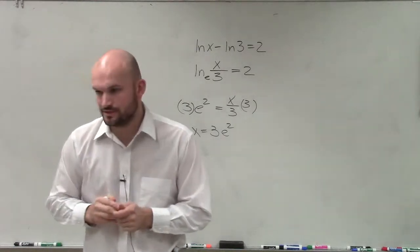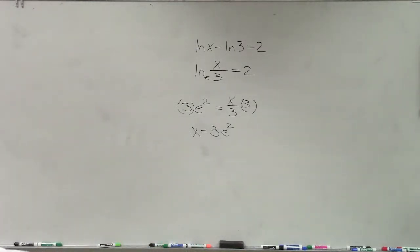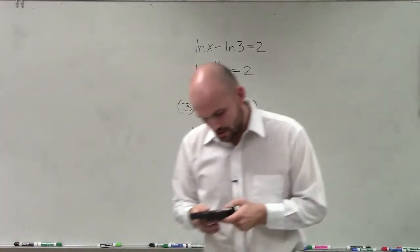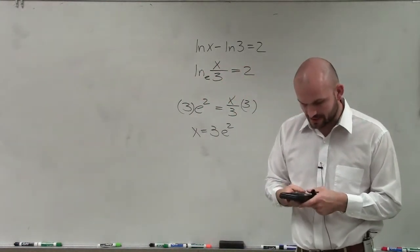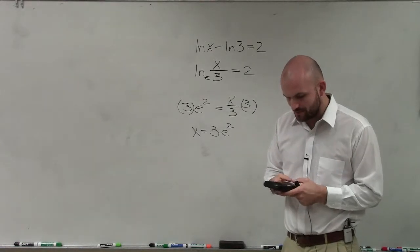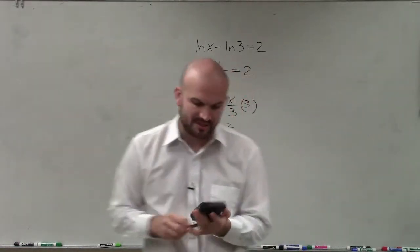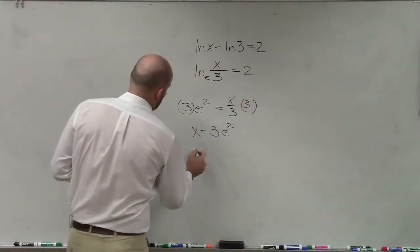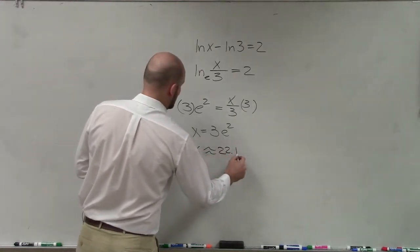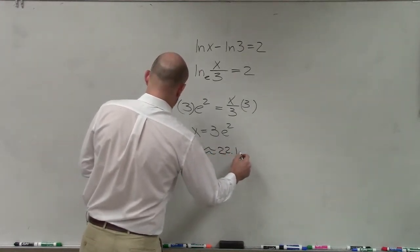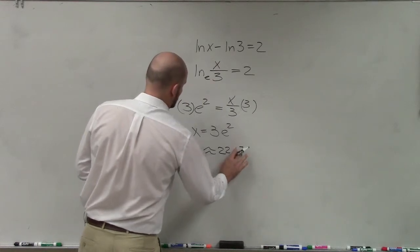Now, in this case, I will need to use a calculator to approximate. So I'm going to borrow Jessica's. So therefore, I'll just take my e, raise it to the second power, multiply it by 3. And depending on what the problem is telling me where to estimate, x is approximately 22.17. I'll just write it at the top there.